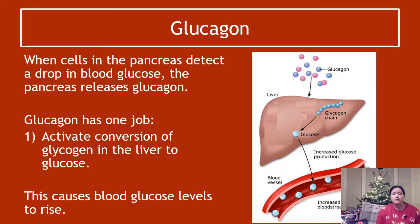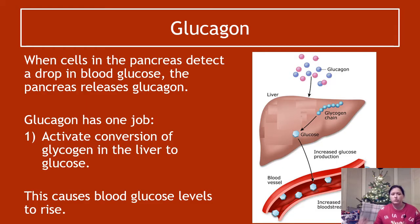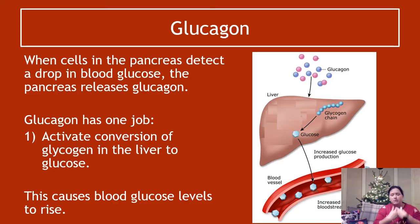Glucagon has the same job as in National 5. When cells in the pancreas detect a drop in blood glucose, the pancreas releases glucagon. Glucagon has exactly one job: activate conversion of glycogen in the liver to glucose. It breaks down glycogen back into glucose units, and this causes blood glucose levels to rise again because the glucose is produced and released into the bloodstream.